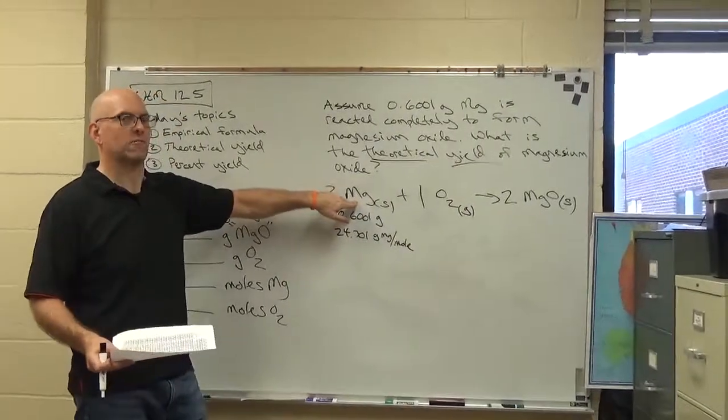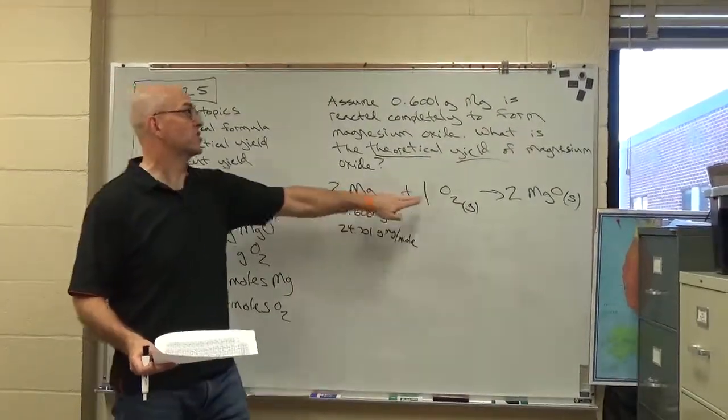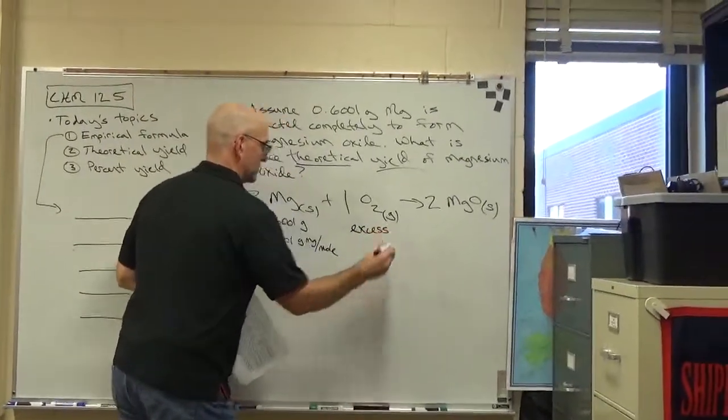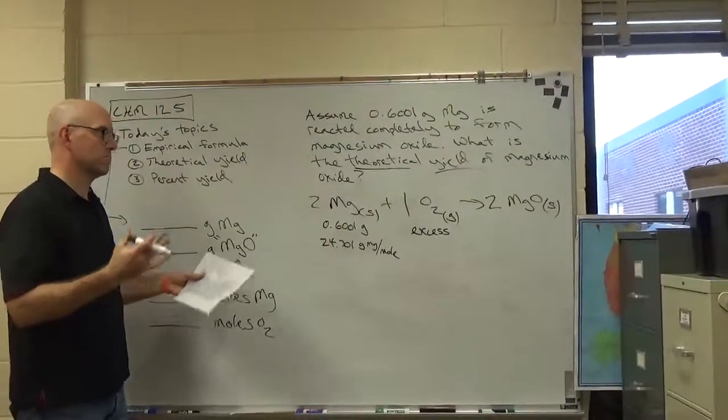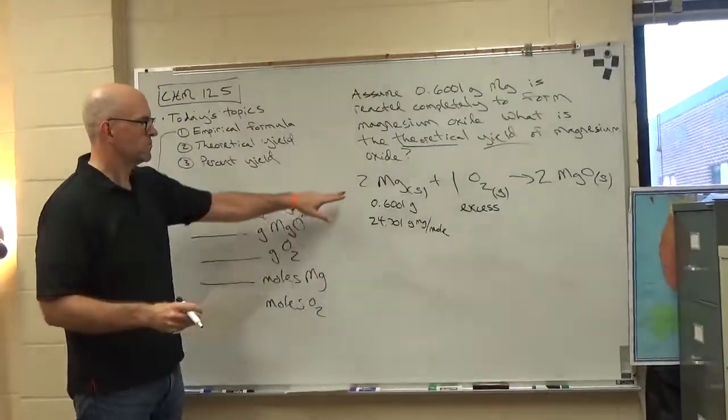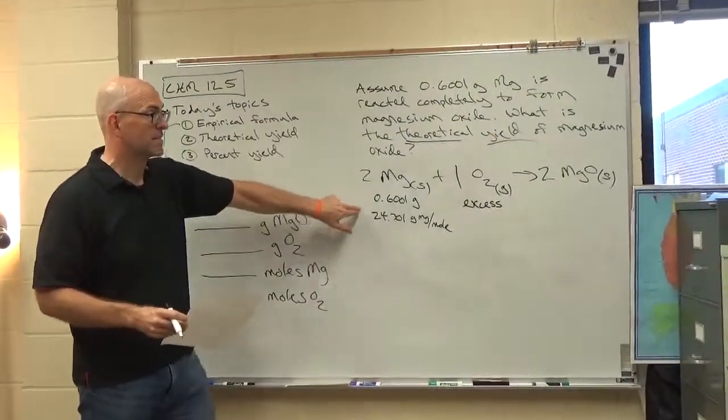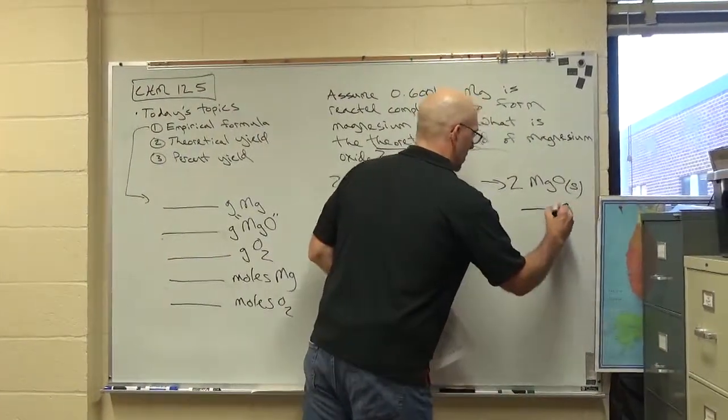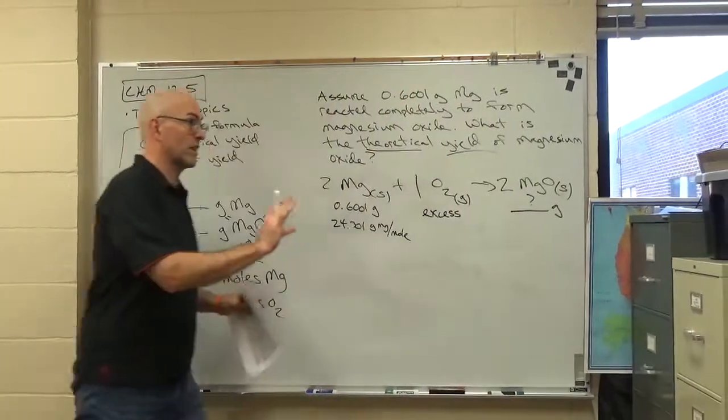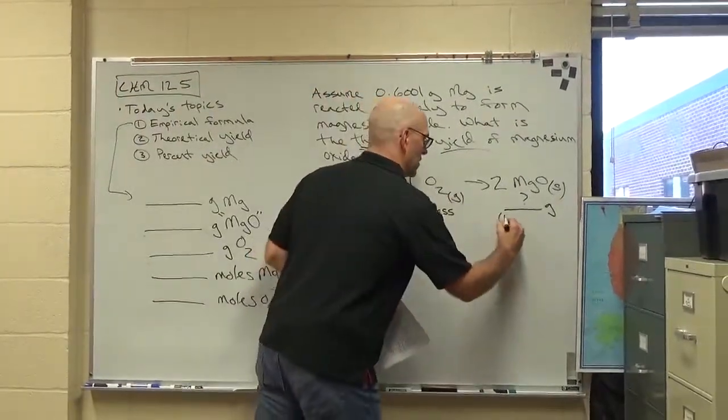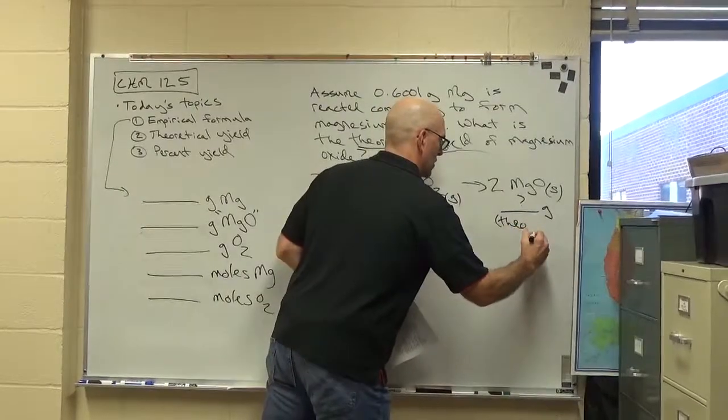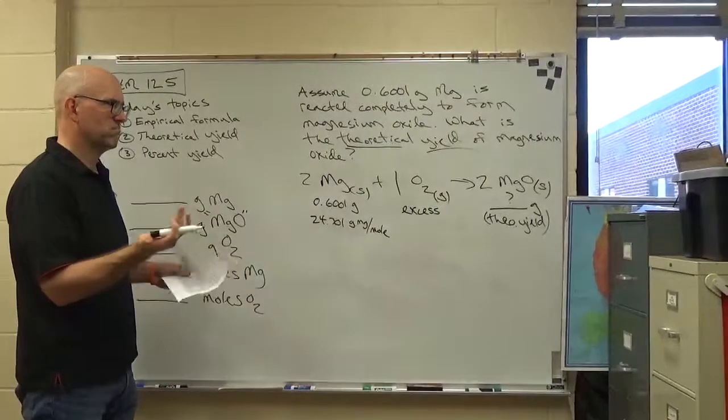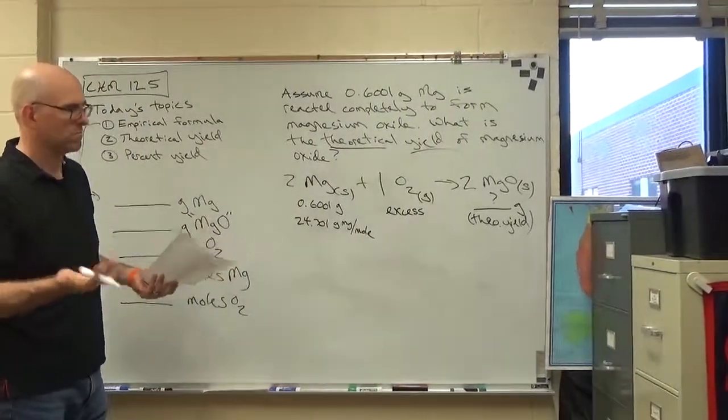This is getting ahead of ourselves. Magnesium is called the limiting reactant. Oxygen is the excess reactant. We didn't measure it, it's just excess by nature because it's in air. So if you want to label this, this is the limiting reactant, this is the excess reactant. And our goal here is to figure out how many grams, that's the theoretical yield by the way, how much mass. So what are the units on theoretical yield? 99 times out of 100 it's grams.